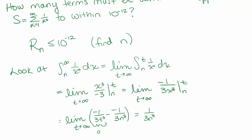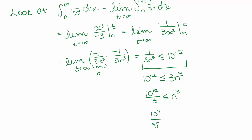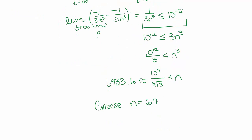So if we want this integral to be less than or equal to 10 to the negative 12th, we solve this equation for n. Bringing 10 to the other side, we get 10 to the 12th is less than or equal to 3n cubed. Since n is positive we don't need to flip the inequality. So we get 10 to the 12th over 3 is less than or equal to n cubed, and 10 to the fourth over the cube root of 3 is less than or equal to n. That number is approximately 6,933.6, so let's choose n equal to 6,934. That means if we look at the first 6,934 terms, we can approximate the sum of the series to within 10 to the negative 12th.